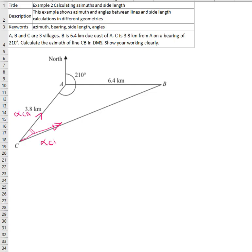Alpha CB equals alpha CA plus, because the angle from the known, which is alpha CA, to the unknown is a clockwise angle, so we add it.